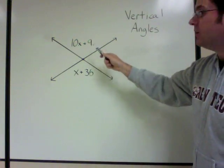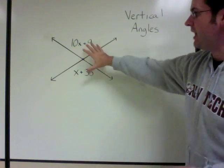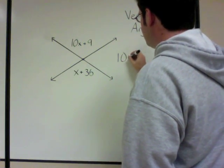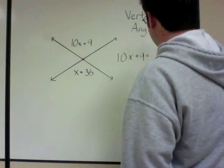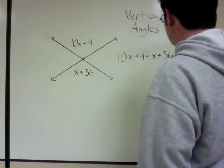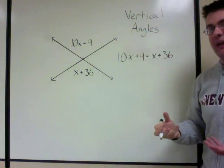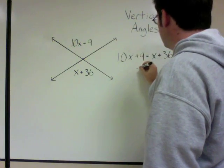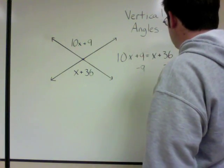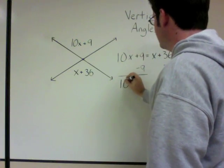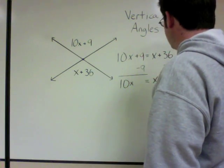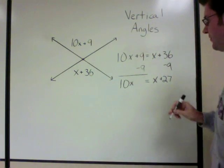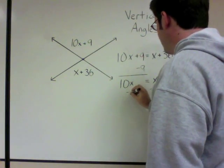Since these are vertical angles, 10x plus 9 equals x plus 36. Subtract 9 from both sides: 10x equals x plus 27. Then subtract x from both sides.